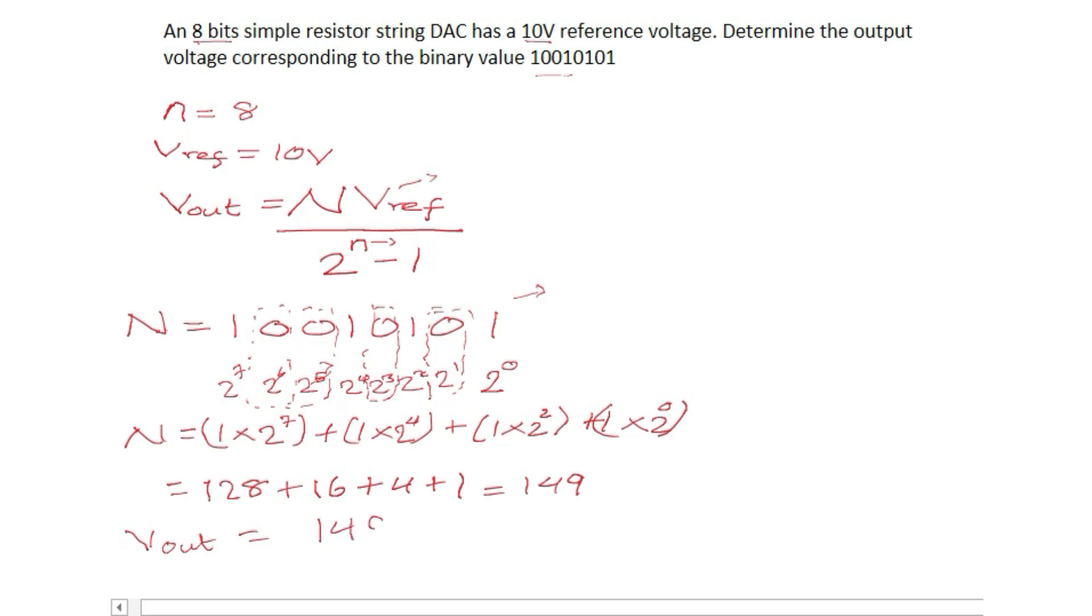So now moving next we have our N, we have our Vref, we have our small n as well. So what remains for us is substitution. So we substitute for our Vout and our Vout will now be 149 which is our capital N that we just got.